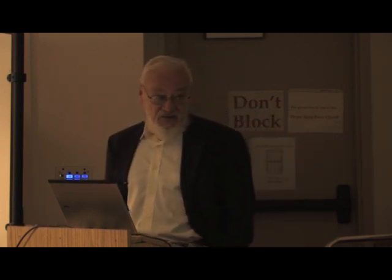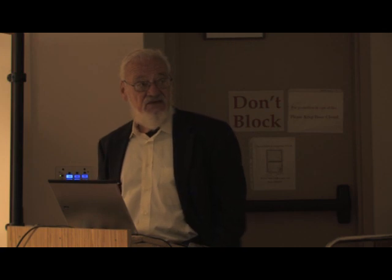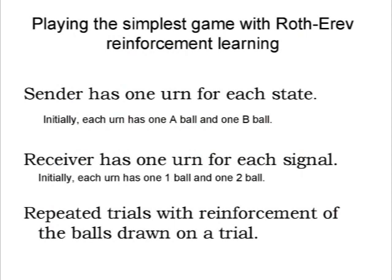Let me start with reinforcement learning in the simplest signaling game: two states, two signals. We can visualize this as an urn process. The sender has an urn for each state; the receiver has an urn for each signal. We start the urns with one ball of each kind — the A ball and the B ball for signal A and signal B, the one ball and the two ball for the states. It's inessential that we start with one ball of each type, as long as we start with a positive number of balls for each type.